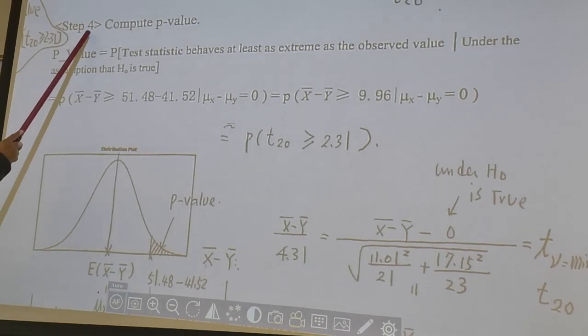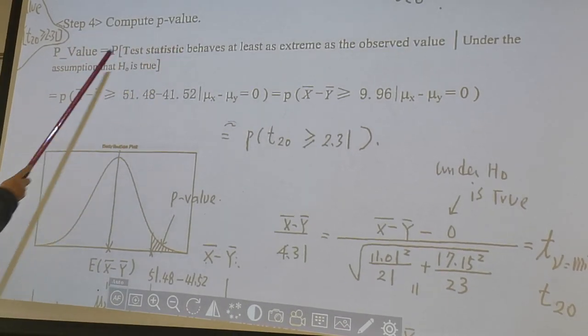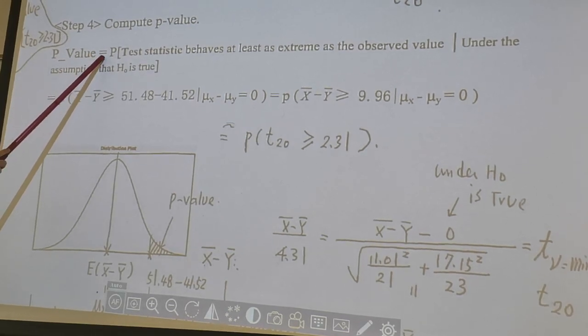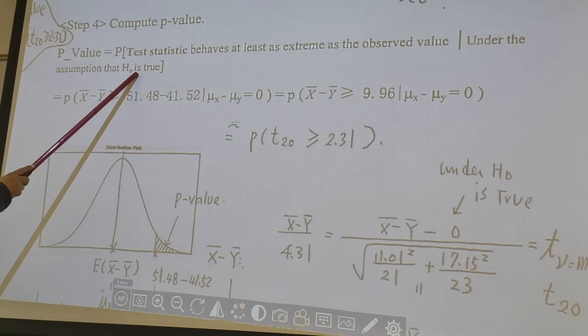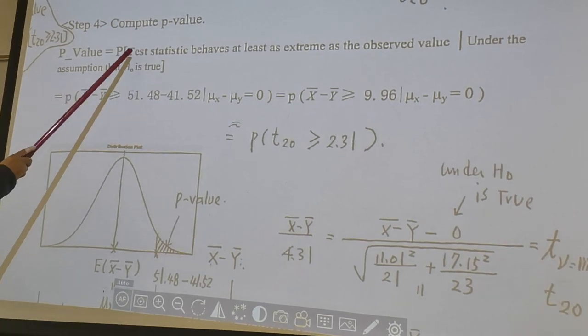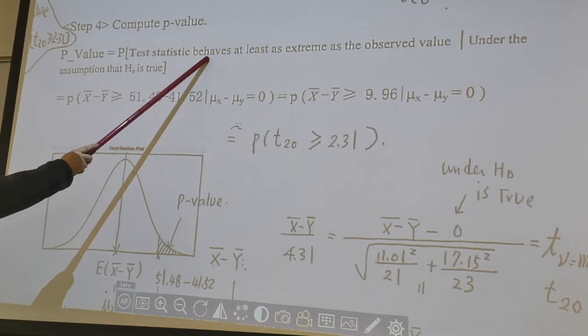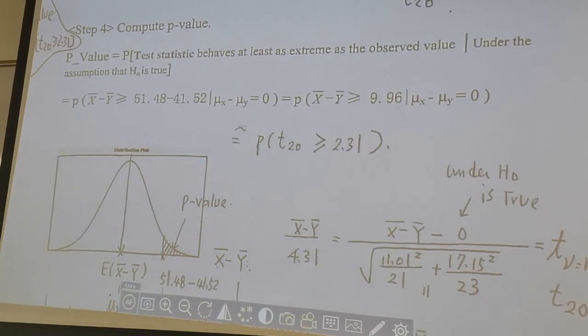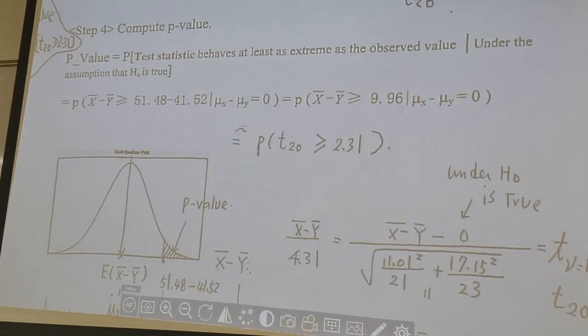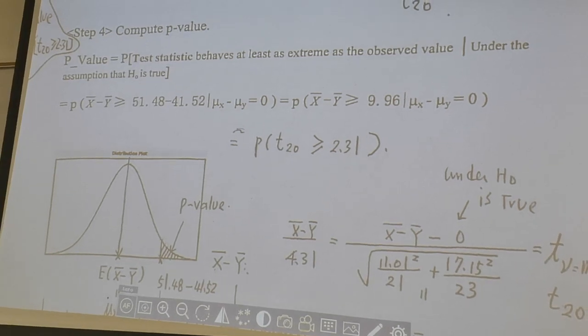Step 4. Compute p-value. How we define p-value? P-value, by definition, is under the assumption that H0 is true, how likely test statistic behaves at least as extreme as the observed value. So, let's look at the sampling distribution of x-bar. Easy to explain with the picture.